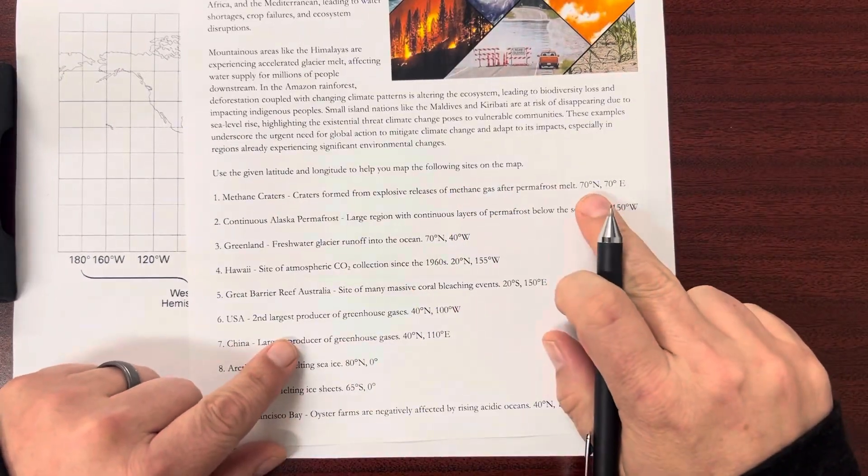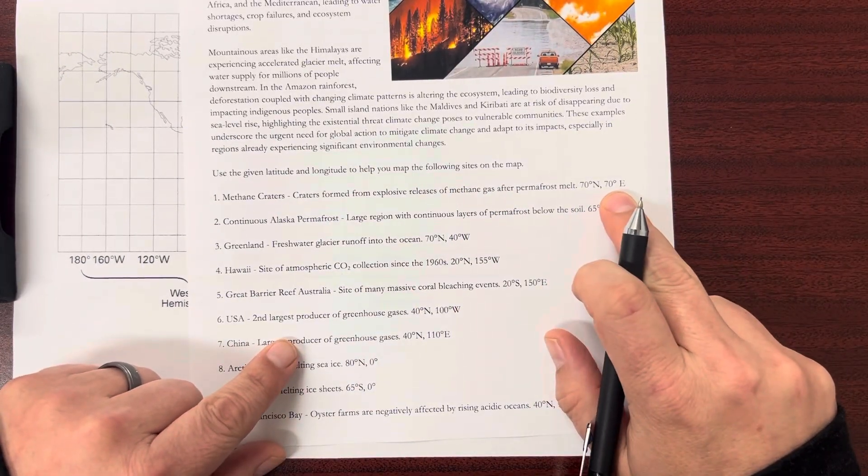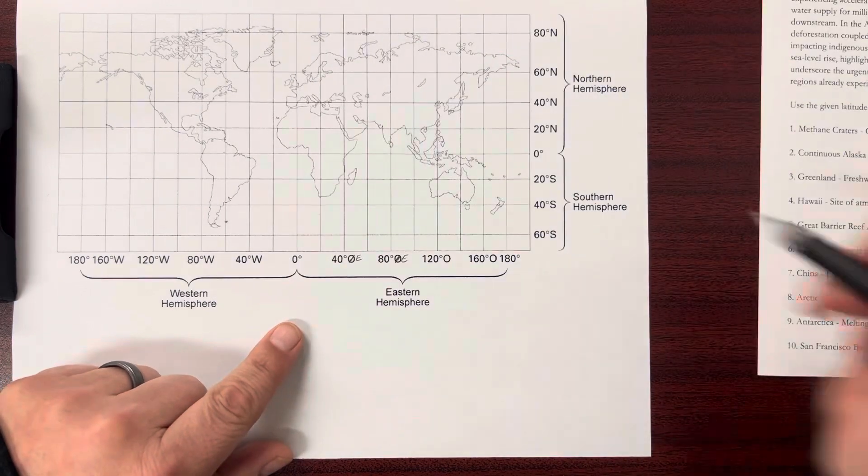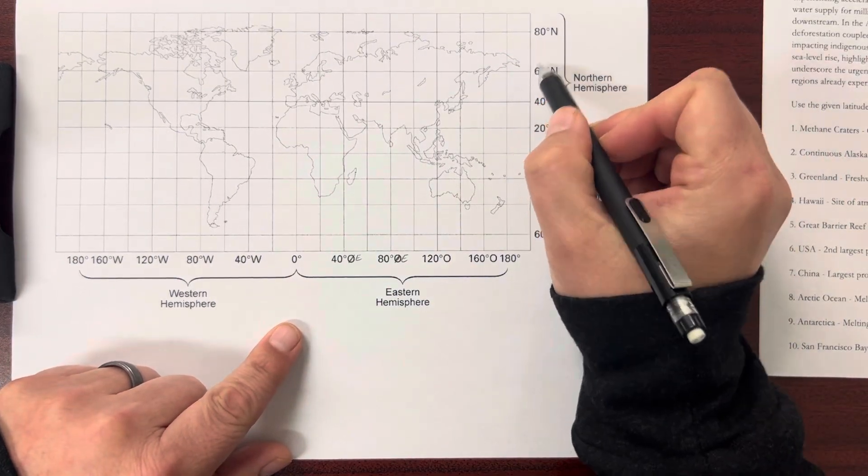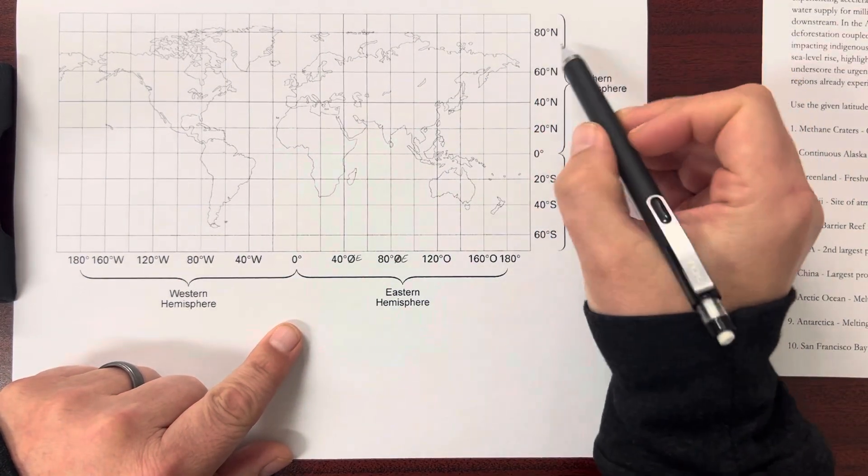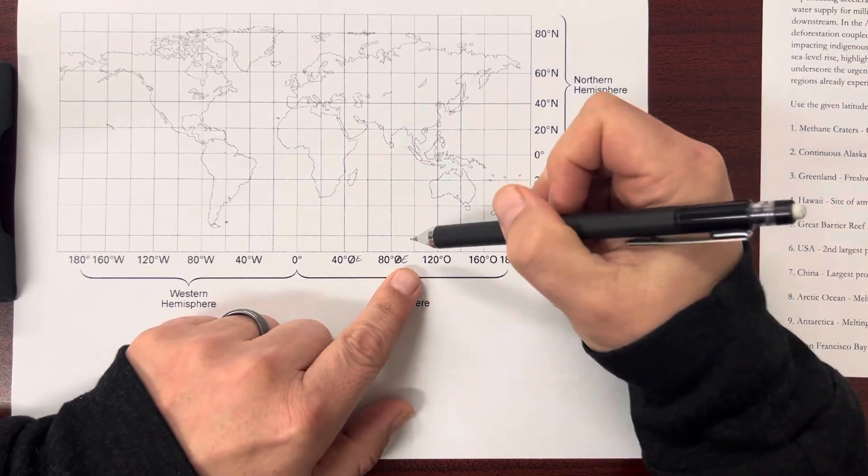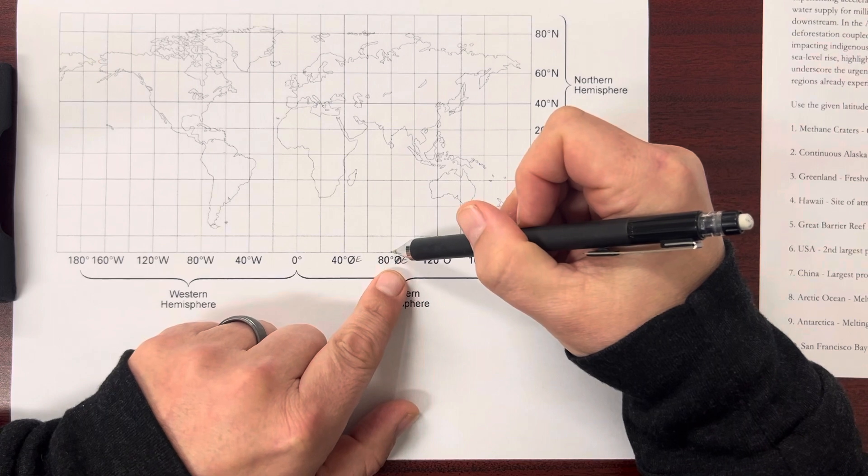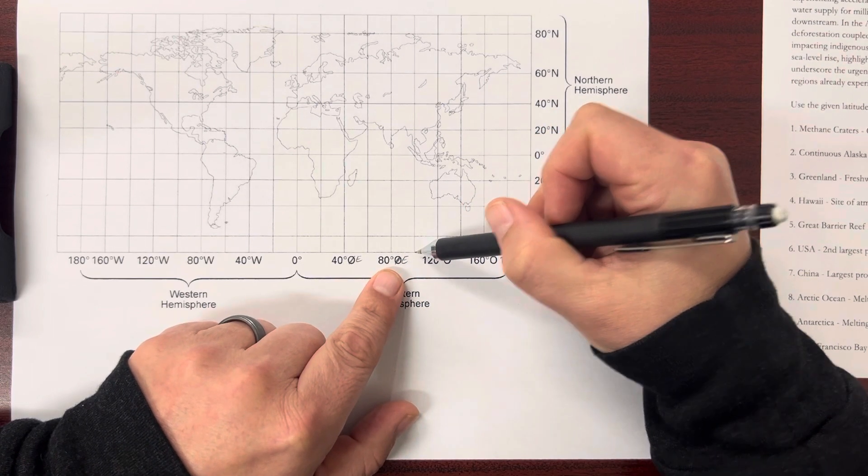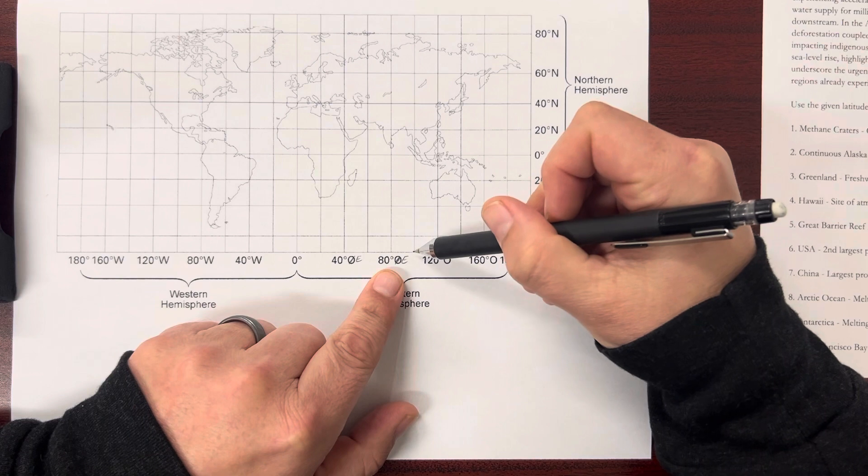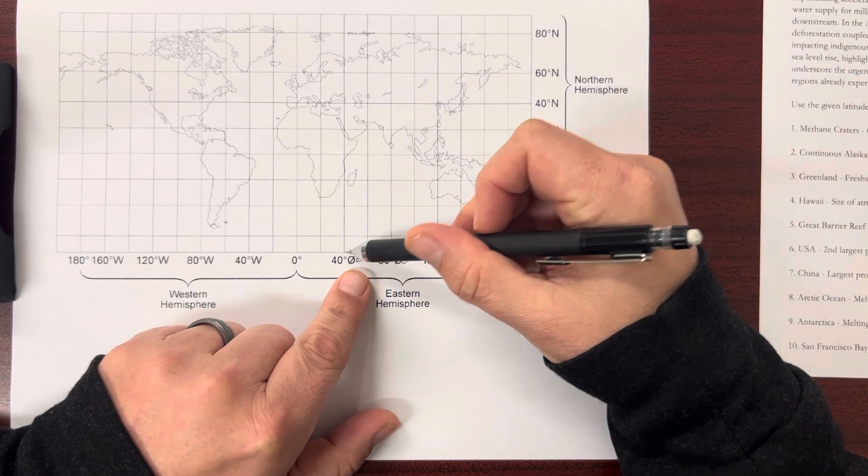So our first one, 70 degrees north and 70 degrees east. North - here's 60, here's 80, 70 is right about there. And then 70 degrees east. Well, here's 80, and then we'd have 100, 120. Here's 40, 60,